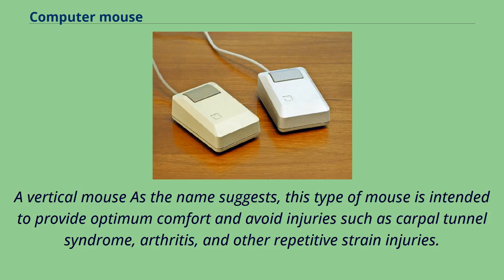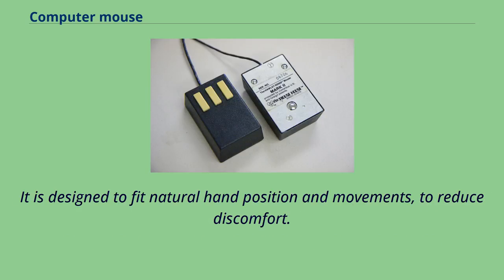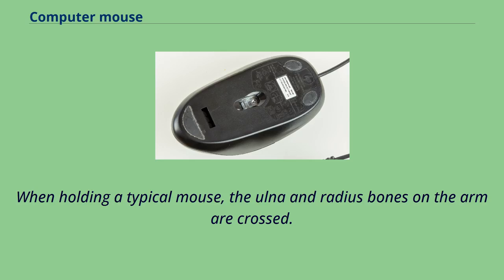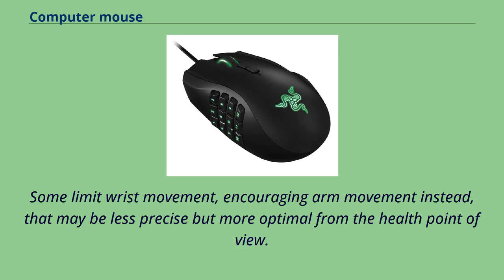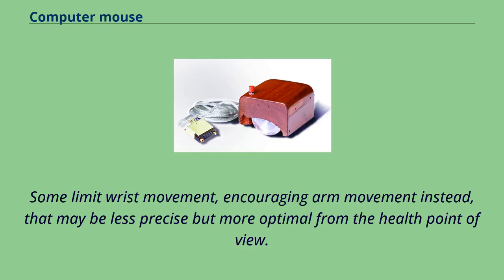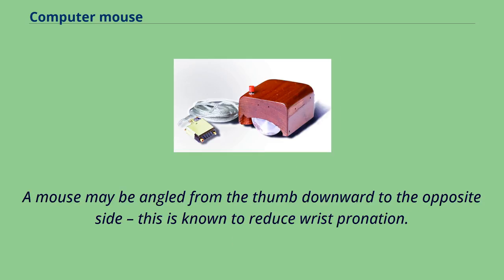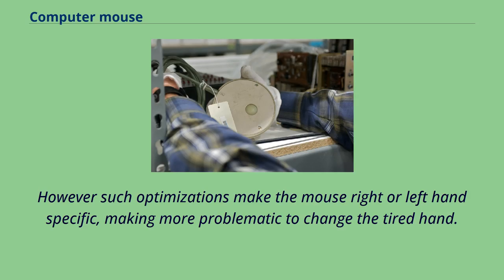A vertical mouse is intended to provide optimum comfort and avoid injuries such as carpal tunnel syndrome, arthritis, and other repetitive strain injuries. It is designed to fit natural hand position and movements to reduce discomfort. When holding a typical mouse, the ulna and radius bones on the arm are crossed. Some designs attempt to place the palm more vertically so the bones take a more natural parallel position. Some limit wrist movement, encouraging arm movement instead. A mouse may be angled from the thumb downward to the opposite side, known to reduce wrist pronation. Such optimizations make the mouse right or left hand specific.